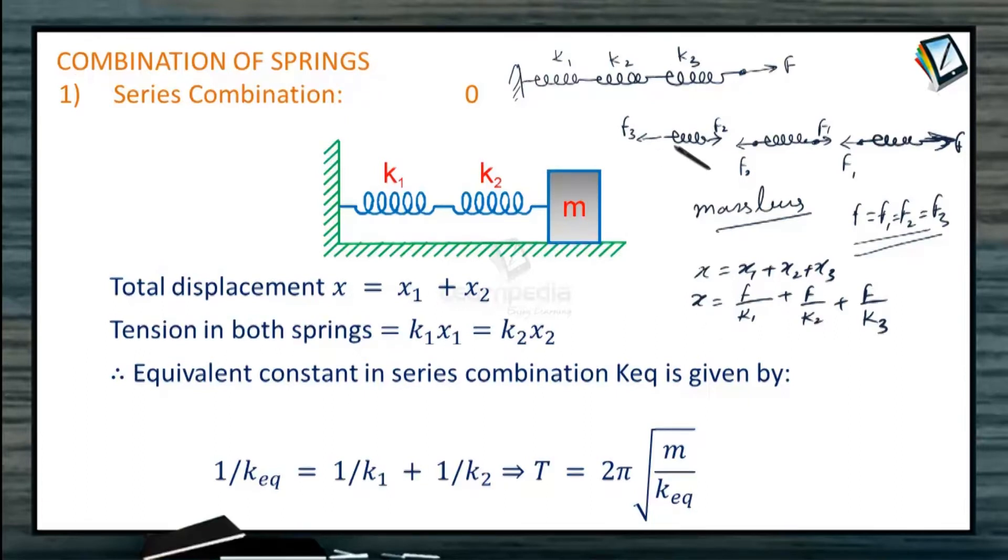Suppose there is a single spring where we apply force F and elongation is X which is equal to the sum of these three. Then that will be the equivalent spring. So here is the relation. After cancelling F we get 1 by K equals 1 by K1 plus 1 by K2 plus 1 by K3.